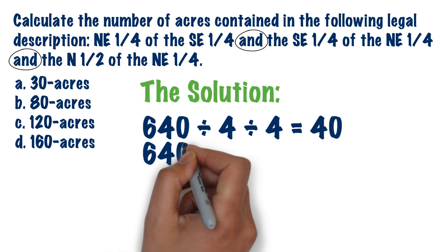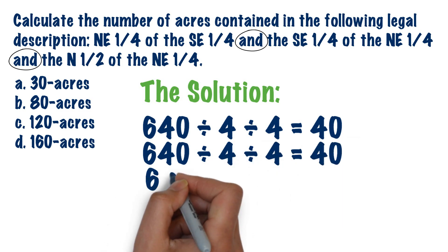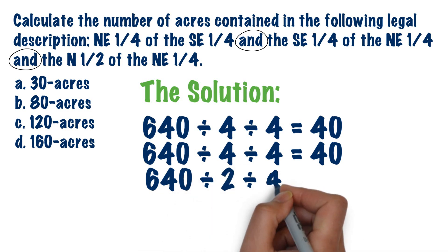Then we take 640, divide by 4, divide by 4, to get 40 again. And then finally, we take 640, divide by 2, divide by 4, to get 80 acres.